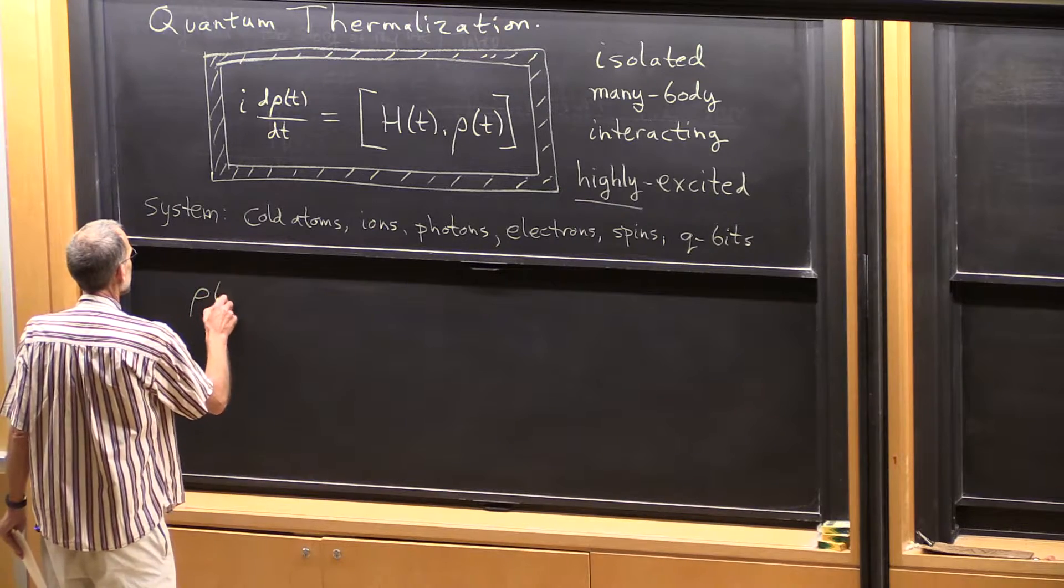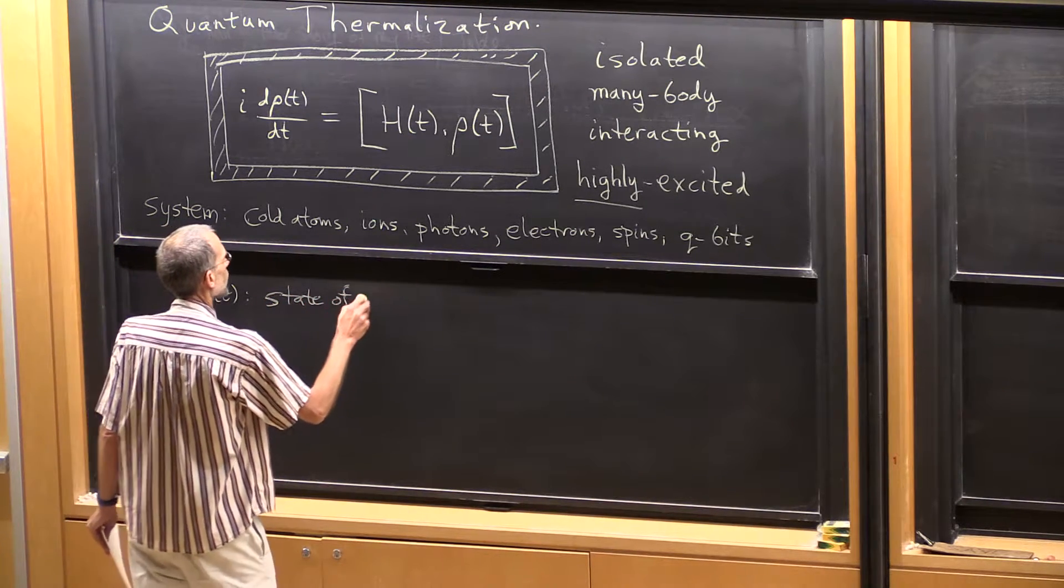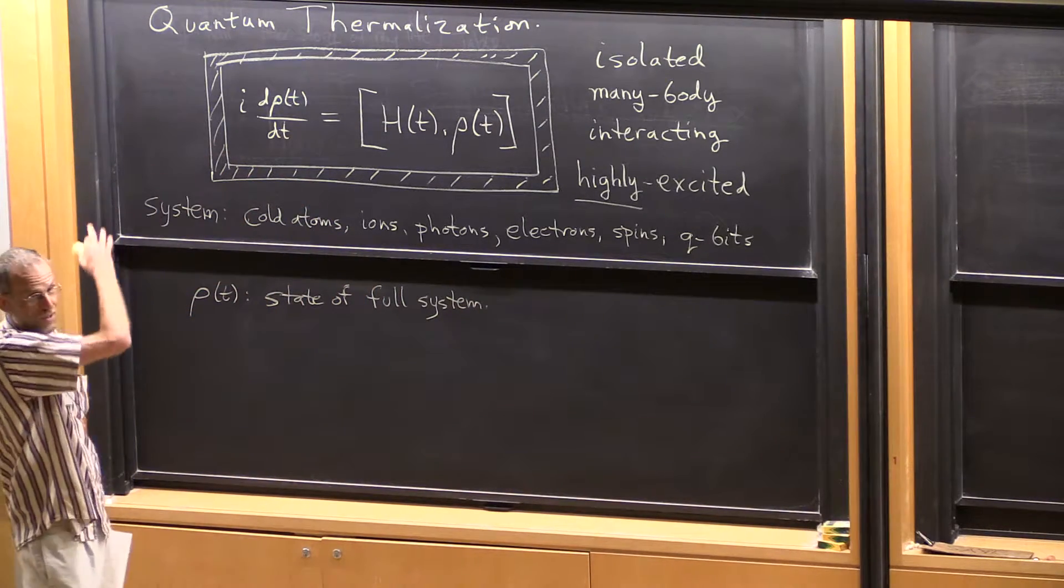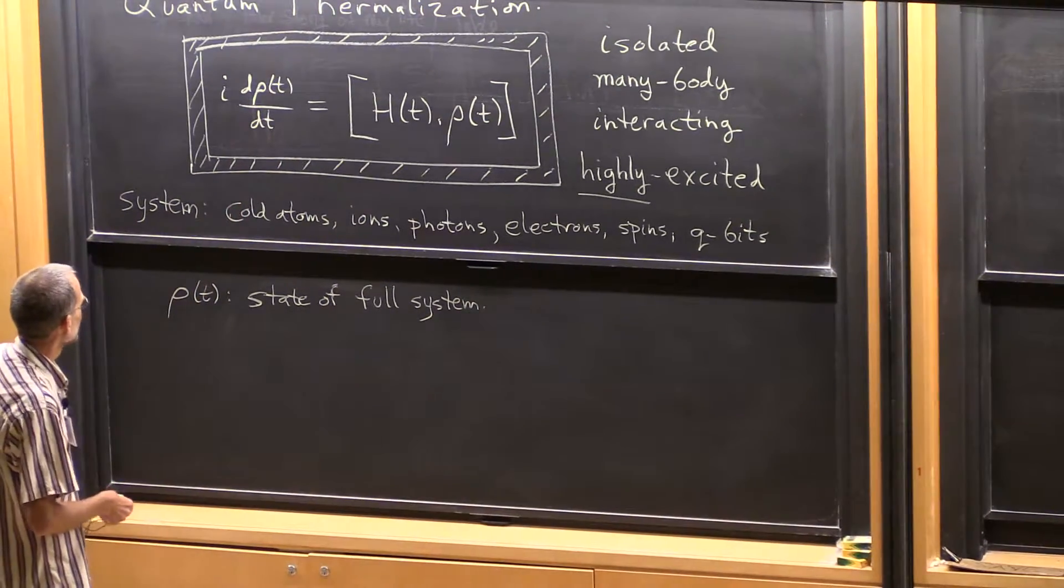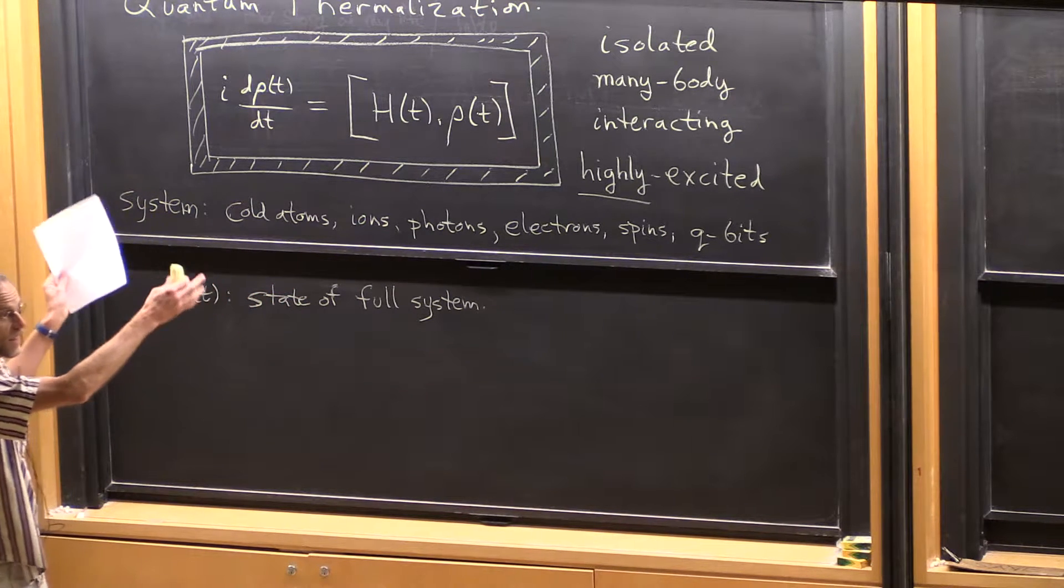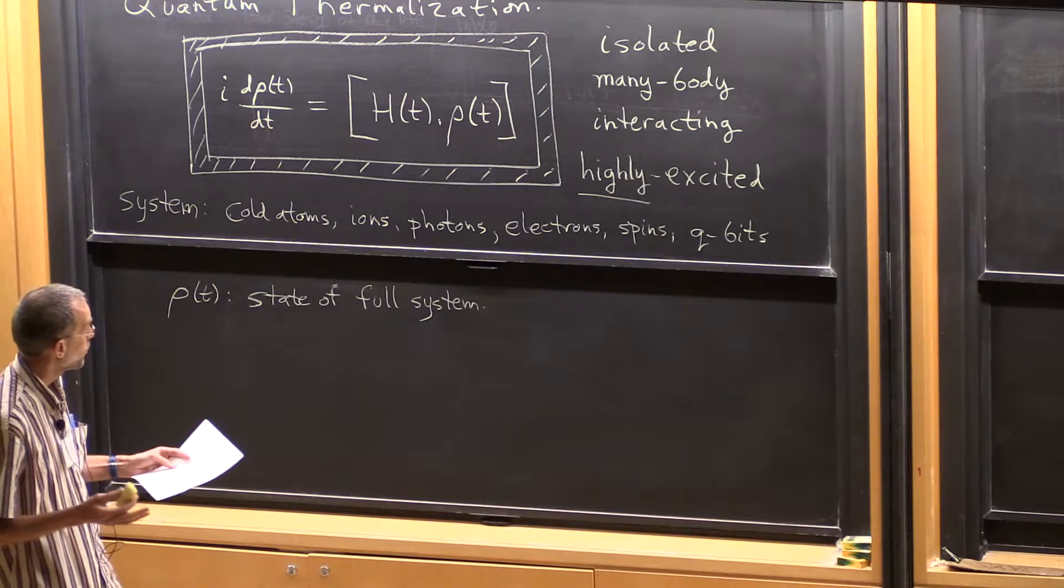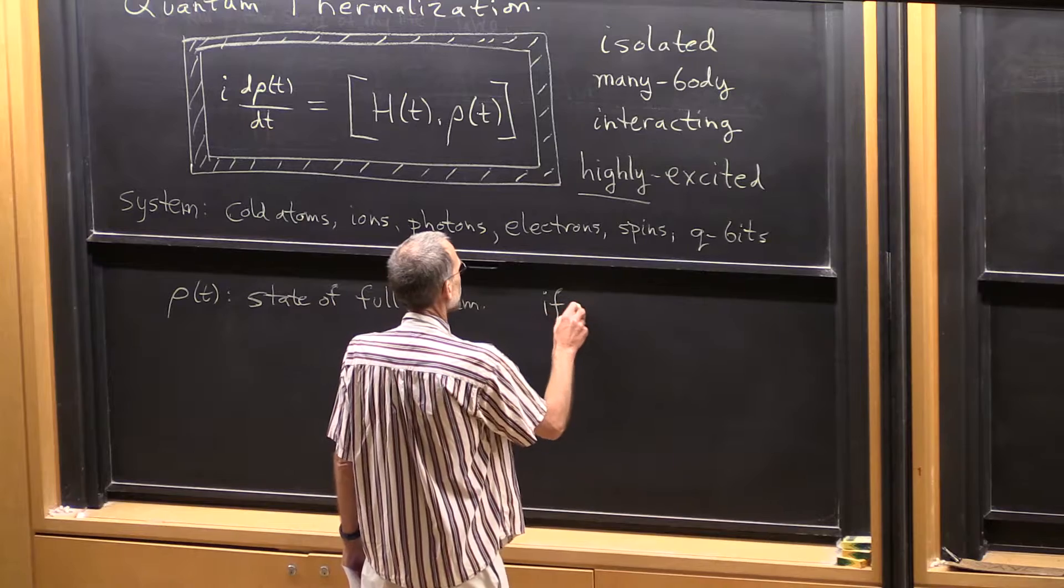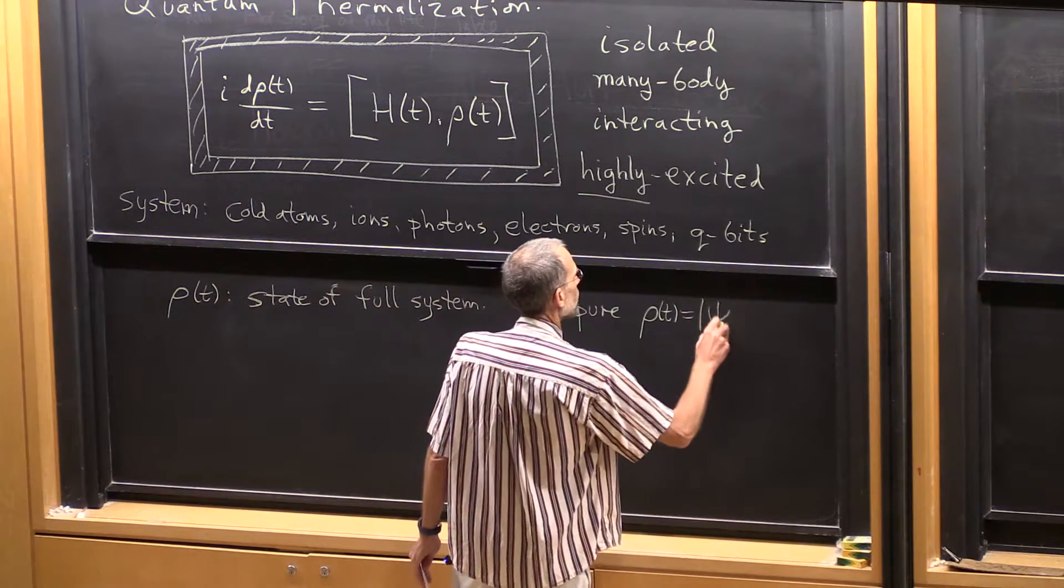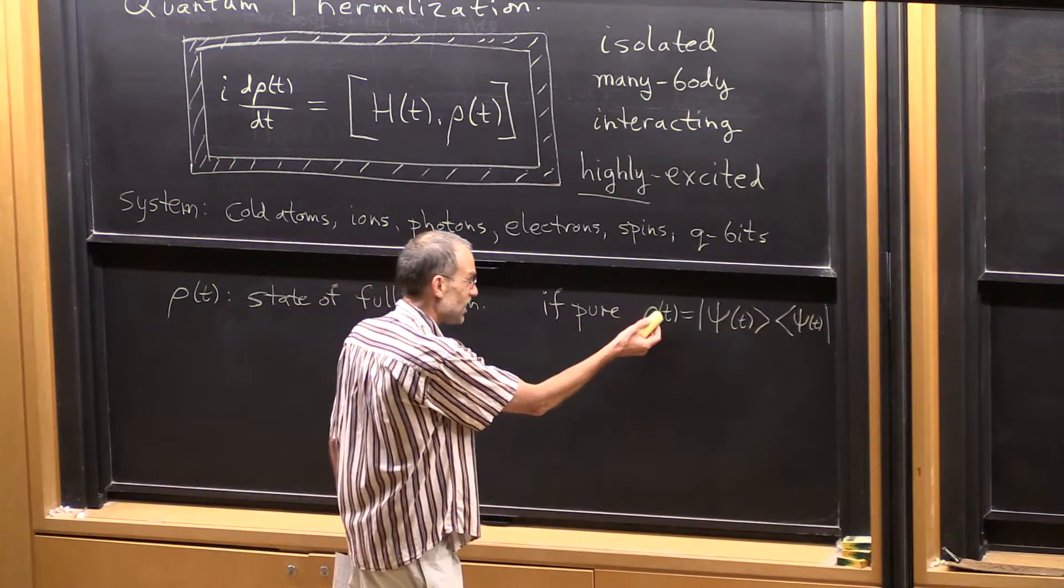So rho of t is the state of the full system. So there's going to be a distinction I'm going to make in a minute between the full system, which is all degrees of freedom, and some subsystem inside. I write it as a density operator because when you're talking a large many-body system, in the laboratory you can't prepare pure states, you can only prepare mixed states.